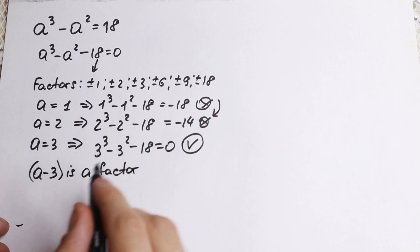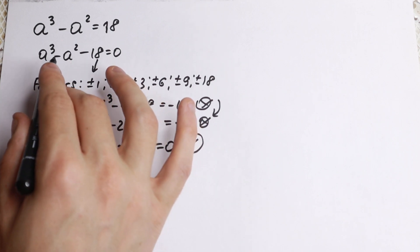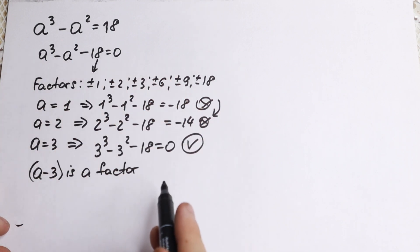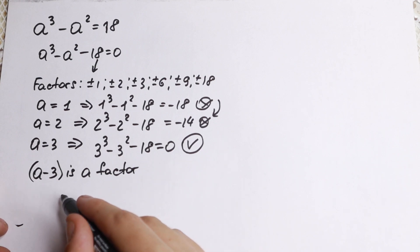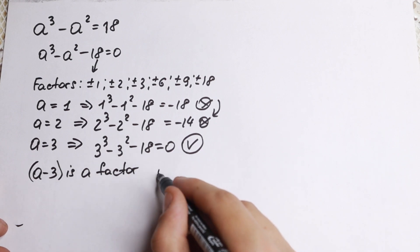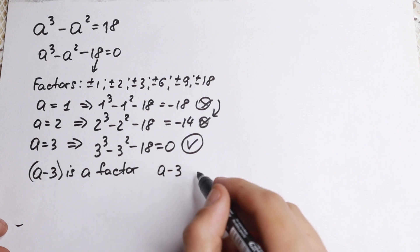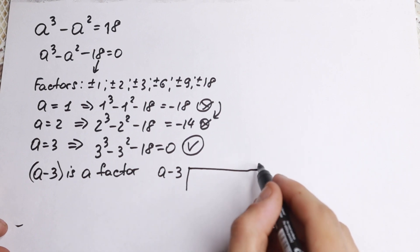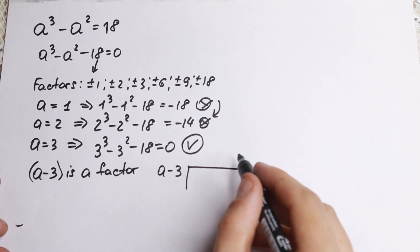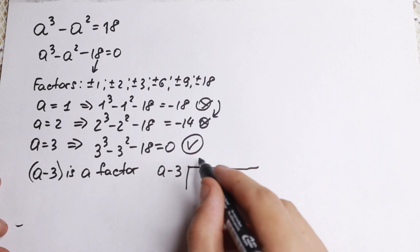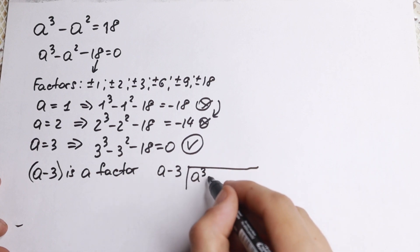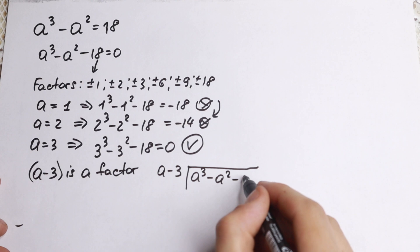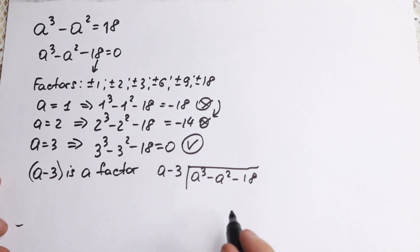But of course, we find the first factor. How can we find the second one? If we divide this expression by this factor, we will have the second one. Of course, let's do this. We have our (a - 3) right here, and right here we're dividing it by this one. We will have a² in our quotient.